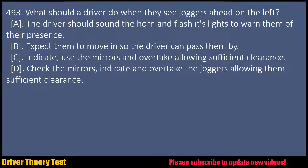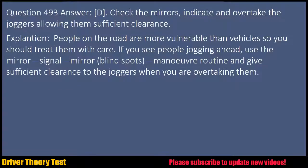Question 493: What should a driver do when they see joggers ahead on the left? A. The driver should sound the horn and flash its lights to warn them of their presence. B. Expect them to move in so the driver can pass them by. C. Indicate, use the mirrors and overtake allowing sufficient clearance. D. Check the mirrors, indicate and overtake the joggers allowing them sufficient clearance. Answer: D. Check the mirrors, indicate and overtake the joggers allowing them sufficient clearance. Explanation: People on the road are more vulnerable than vehicles so you should treat them with care. If you see people jogging ahead, use the mirror, signal, mirror, blind spots, manoeuvre routine and give sufficient clearance to the joggers when you are overtaking them.